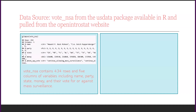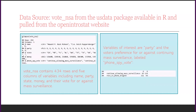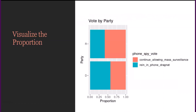Two variables that were of interest to me were party — whether Democrat or Republican — and the voter's preference for or against continuing mass surveillance. I was interested in whether a voter's party and how they voted would pass a test for independence. After removing the rows of non-voters, I visualized the proportion of voters who want to continue mass surveillance. It appears the difference in vote by party is statistically significant, so I will test for independence.